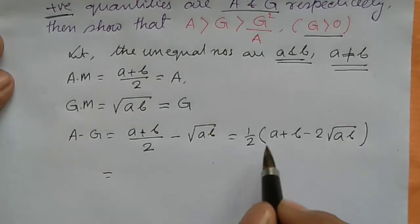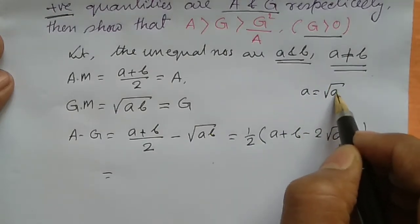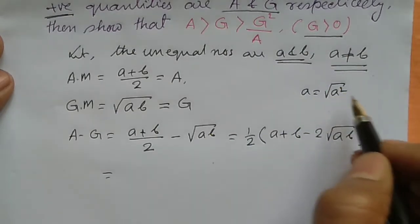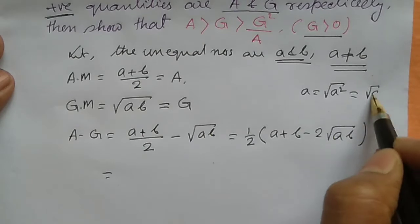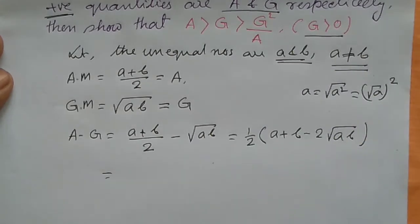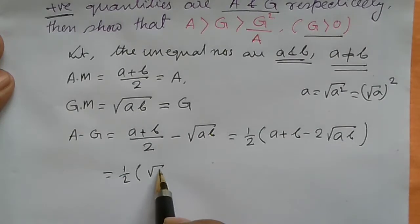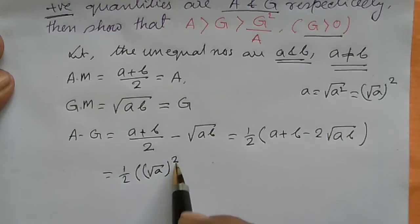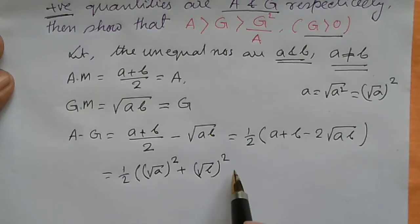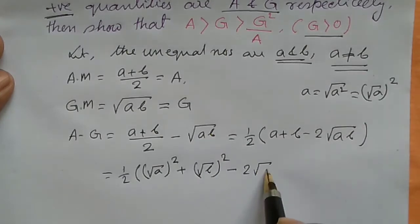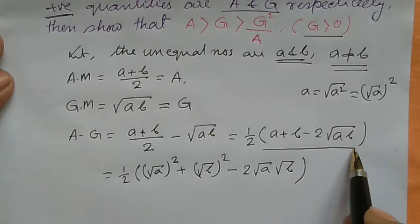We can write a = (√a)² and rewrite the expression. Taking (1/2) as common: A − G = (1/2)[(√a)² + (√b)² − 2√a · √b].